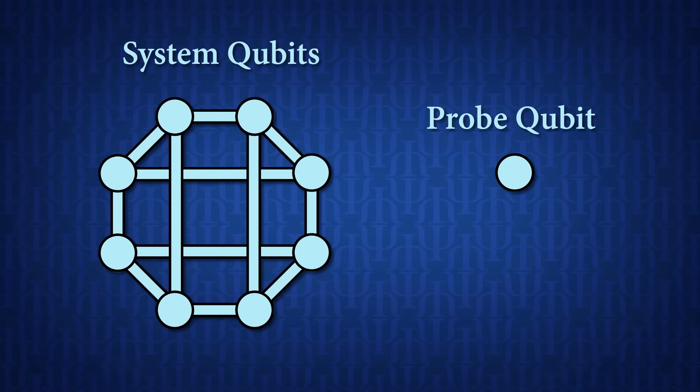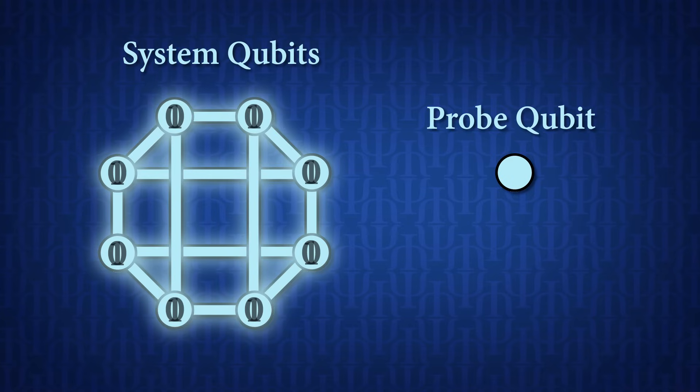Then what you do is you anneal the probe qubit but keep the system qubits in the entangled state. And you can do this in such a way that the eigenspectrum of the system qubits are not changed by the probe qubits, but the probe qubit feels a bias from the system qubits. So what you can do with this is change the relative energy levels of the probe qubit and the system qubits and actually scan over the eigenspectrum of the system qubits and map it out. When I first learned about this technique, I thought it was really amazing that you can actually probe the eigenspectrum of these system qubits.